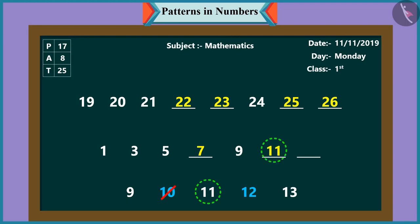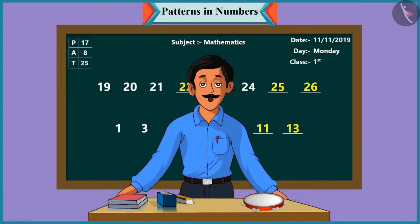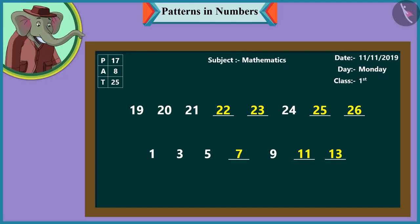Well done, Chutki. Come, Pinky. Now proceed with this pattern. In this pattern, ten does not come after nine. The next number will be eleven. And after eleven will come thirteen and not twelve. Wow, Pinky. Well done.